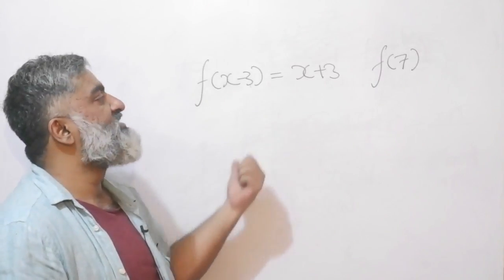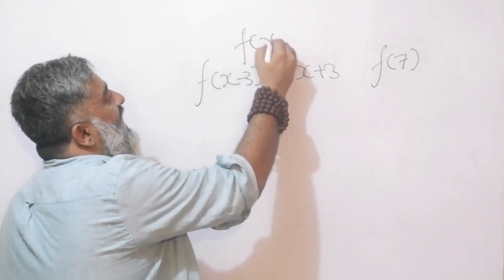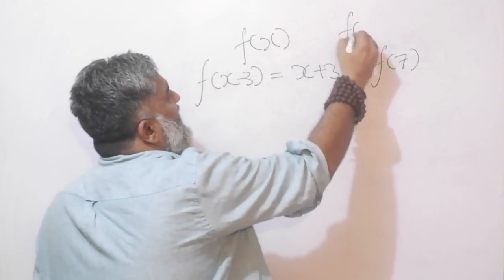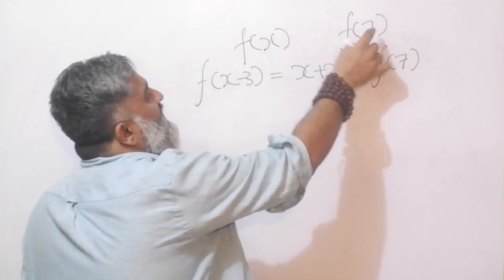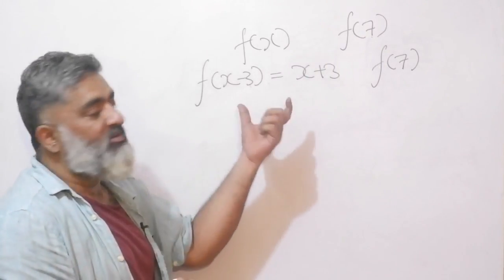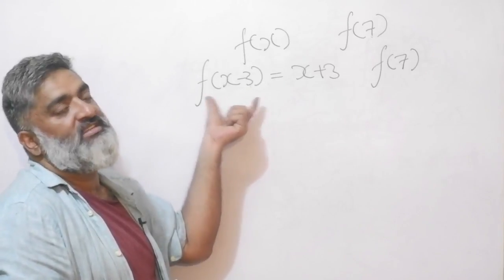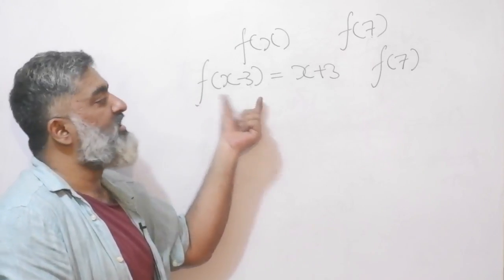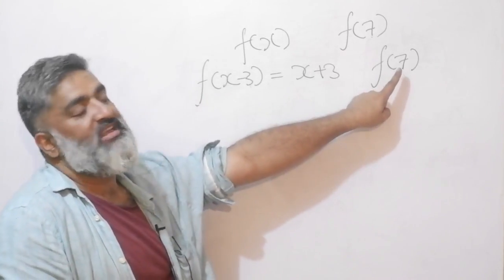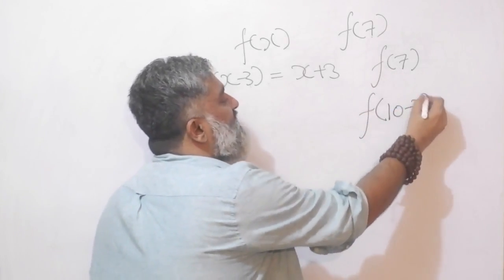Normally we have a function of x. In that case if I say find the value of f of 7, wherever there was x in the story I will just put 7 and my work will be done. But the difference here is this is not a function of x. This is a function of x minus 3.